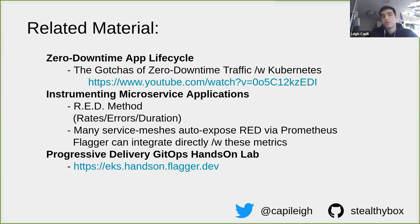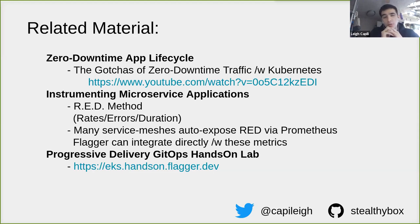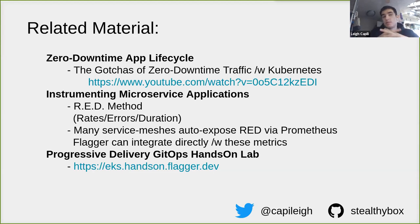Many service meshes expose metrics contextually about how apps communicate, and you can get automatic exposure of RED metrics. If your service mesh exposes RED via Prometheus, then Flagger — an open source project maintained by Stefan, who's in our audience today — can integrate directly with those Prometheus RED metrics exposed by service meshes such as Linkerd, AppMesh, or load balancers like Gloo.